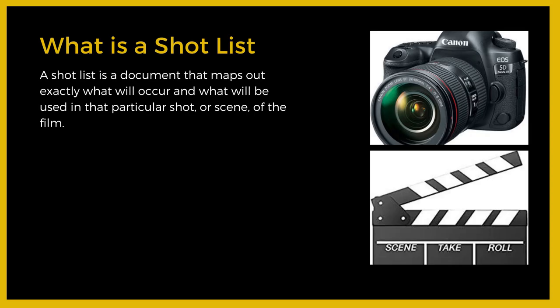Now some of you may ask, what is a shot list? A shot list is a document that maps out exactly what will occur and what will be used in that particular shot or scene of the film.